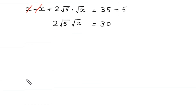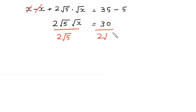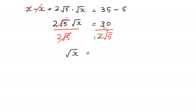Now we divide both sides by 2√5. The 2√5 cancels on the left side, leaving √x equal to 30 divided by 2√5, which simplifies to 15 divided by √5.